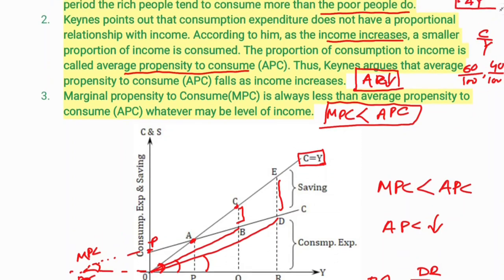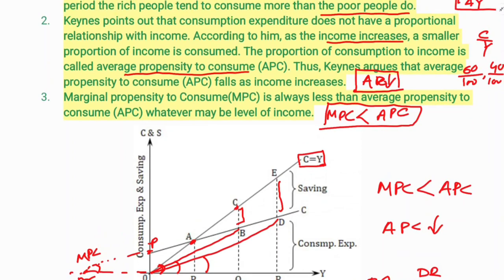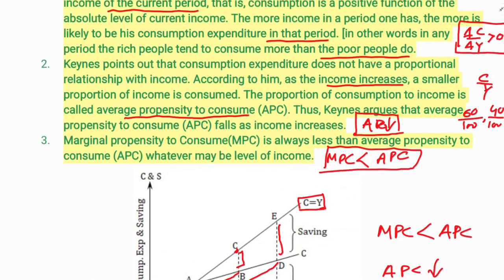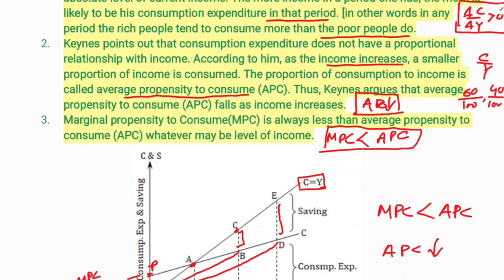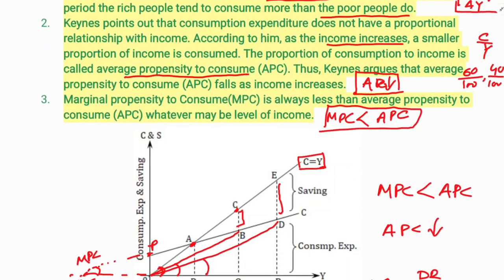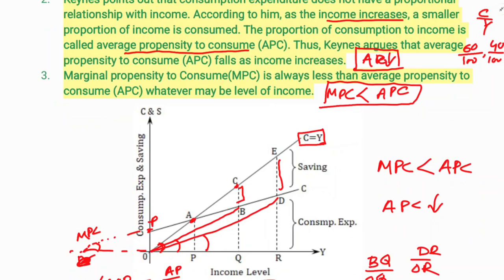So the three statements are: first, an increasing function — income increases and consumption increases; second, average propensity to consume declines; and third, marginal propensity to consume is less than average propensity to consume. This is the Keynesian law of consumption.